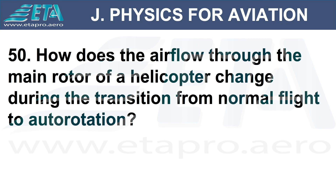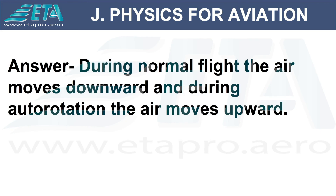How does the airflow through the main rotor of a helicopter change during the transition from normal flight to autorotation? Answer: during normal flight the air moves downward, and during autorotation the air moves upward.